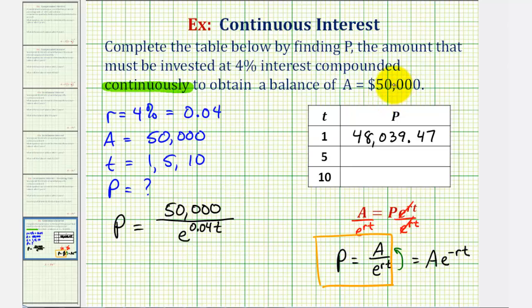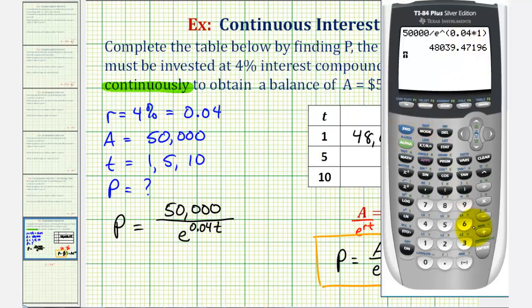Now let's find P if T equals five years. If we press second enter, we can edit the previous entry, so now we'll change the one to five for T equals five. Press enter. When T equals five, the initial investment would have to be $40,936.54.